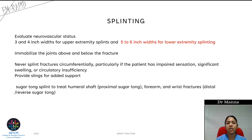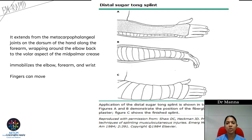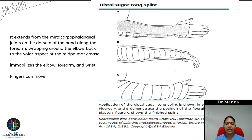For Colles' fracture, the sugar tong splint is preferred. There is a proximal sugar tong splint for humeral fractures and a distal sugar tong splint for forearm and wrist fractures — also called the reverse sugar tong splint. It extends from the metacarpophalangeal joint on the dorsum of the hand along the forearm, wraps around the elbow, and returns on the volar aspect to the mid-palmar crease. This immobilizes the elbow, forearm, and wrist while allowing the patient to move the fingers.